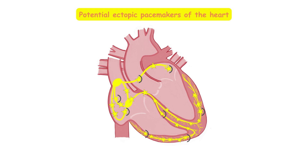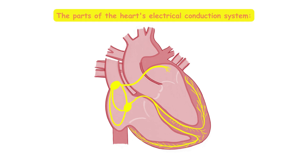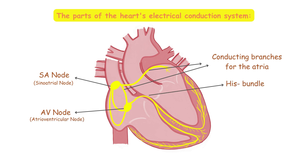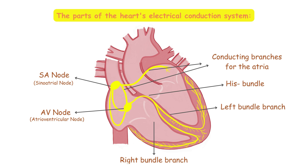Let's recap briefly. The parts of the heart's electrical conduction system are: the SA node, or the sinoatrial node, followed by the conducting branches for the atria. Then comes the AV node, or the atrioventricular node. Then comes the bundle of His, immediately bifurcating into right and left bundle branches. And at the end, their subdivisions — the Purkinje fibers.